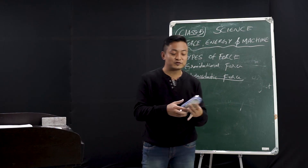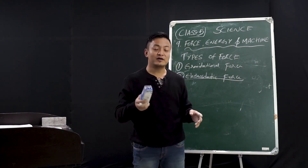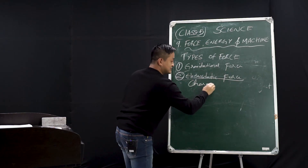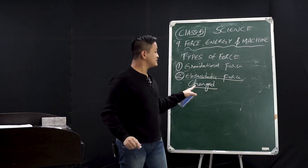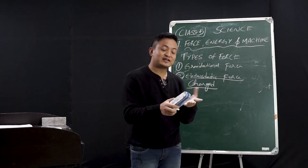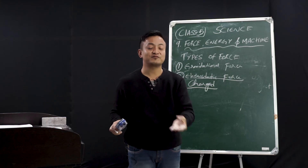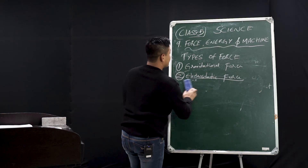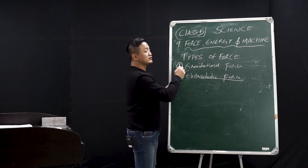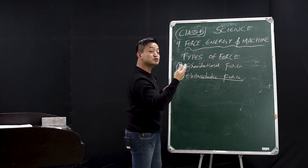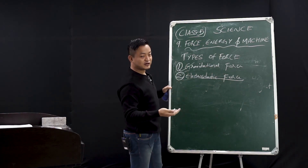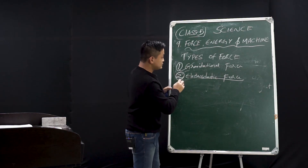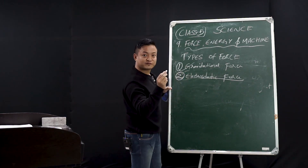This is an example of electrostatic force. Because while combing your hair, the comb got charged. And as a result of getting charged, it is attracting the small bits of paper. We have studied gravitational force, who discovered the law of gravity — Isaac Newton, the father of modern science — and the second type, electrostatic force.